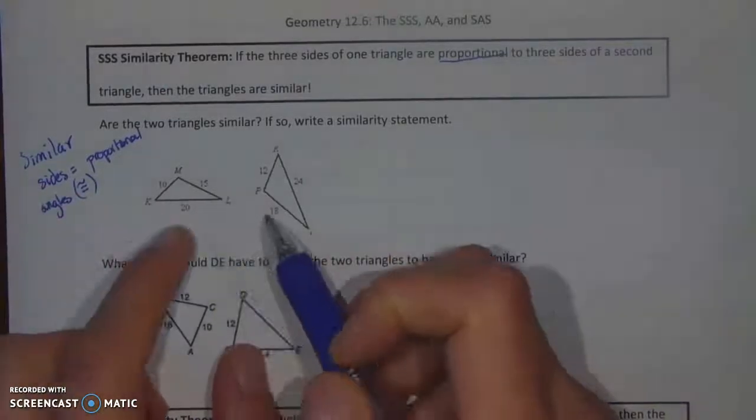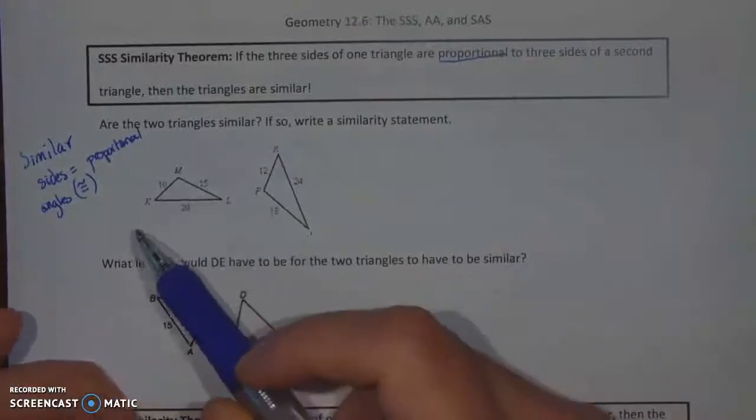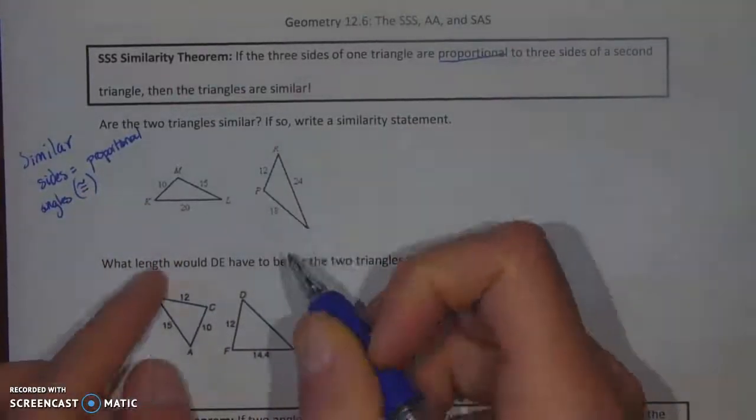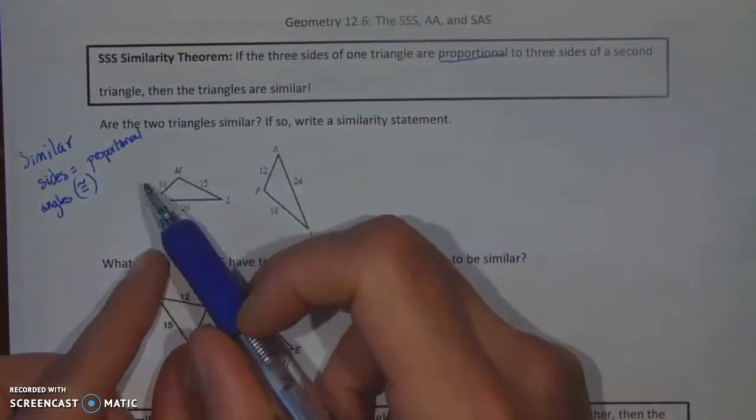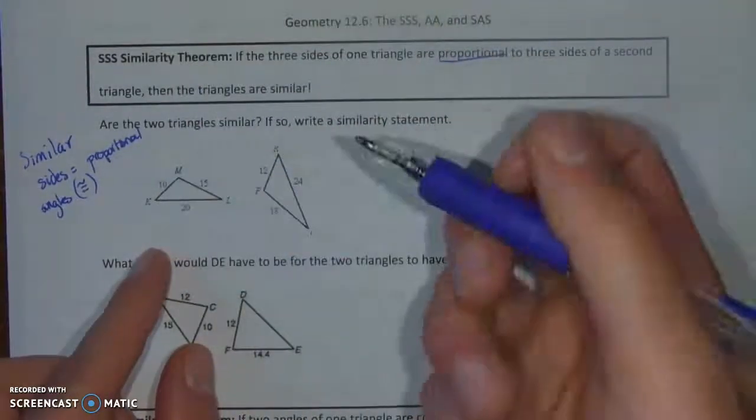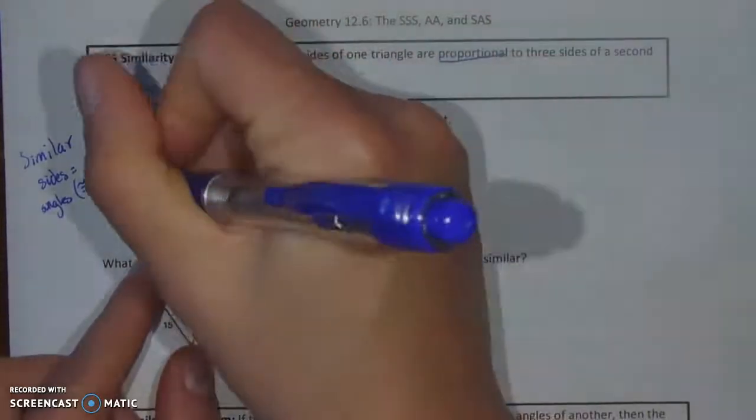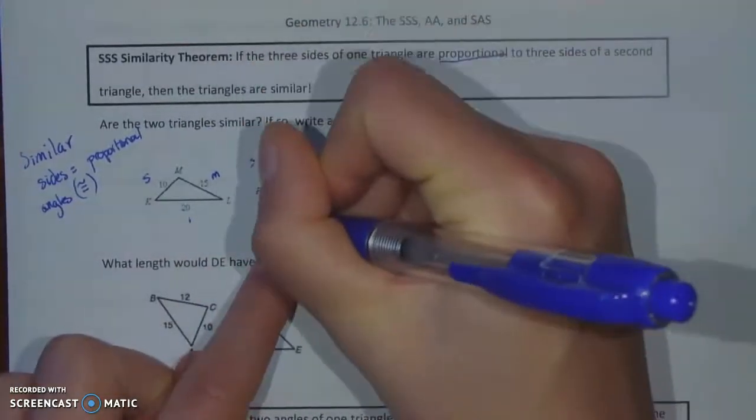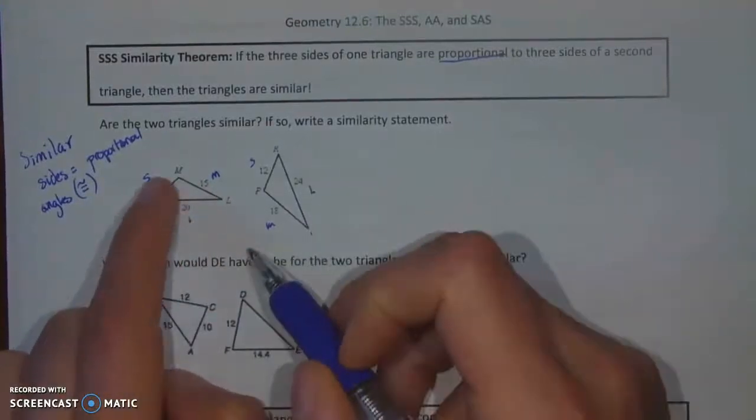One of the problems with using SSS is you're going to have to figure out how the things align. What I tend to do is I look for the smallest, middle, and largest side because that way I can check if they're going to be proportional to each other. The smallest on this side should correspond to the smallest on this, and medium should correspond to the medium side and largest to the largest. So here's my small, medium, large and over here I've got a small, medium, large.